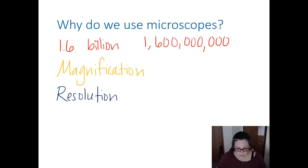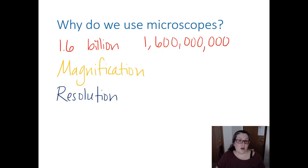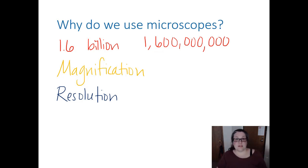We can view objects a thousand times smaller just with light microscopes, and with other microscopes like scanning electron microscopes, transmission electron microscopes, and even ones that use lasers like confocal — these allow us to view things on the nanometer scale, which is billionths of a meter.